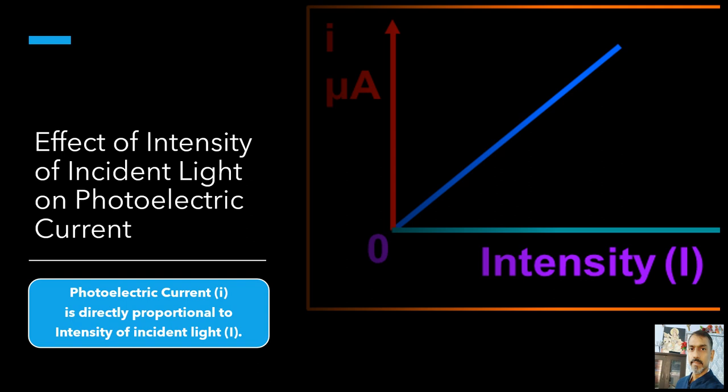Keeping the frequency of the incident radiation and the accelerating potential fixed, the intensity of light is varied and the resulting photoelectric current is measured each time. It is found that the photocurrent increases linearly with intensity of incident light, as shown graphically in the figure. The photocurrent is directly proportional to the number of photoelectrons emitted per second. This implies that the number of photoelectrons emitted per second is directly proportional to the intensity of incident radiation.